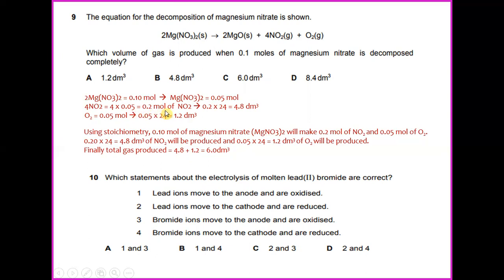4NO2 is equivalent to 4 times 0.05, giving 0.2 mol of NO2. And it goes for oxygen O2. O2 in this case is 0.05. So when you total up, for NO2 it's 0.2 multiplied by 24, giving 4.8 decimeter cube of NO2 produced. And on the oxygen side, there will be 0.05 multiplied by 24, giving 1.2 decimeter cube of O2 produced. So the final total gas produced in this question will be 4.8 decimeter cube plus 1.2 decimeter cube, giving the answer of 6 decimeter cube. So the answer for number 9 would be C, 6.